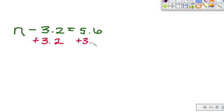Let's try one with a decimal. We have n take away 3.2 equals 5.6. So again, the inverse operation of minus 3.2 would be to add 3.2. And what you do to one side, you got to do to the other side.